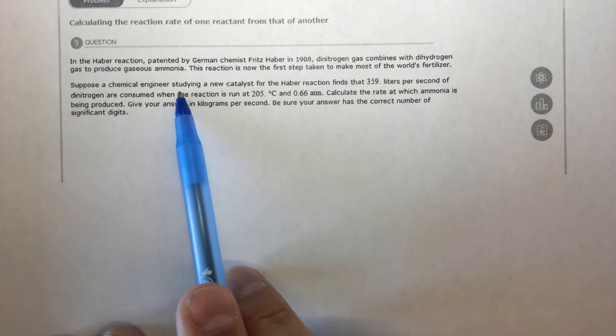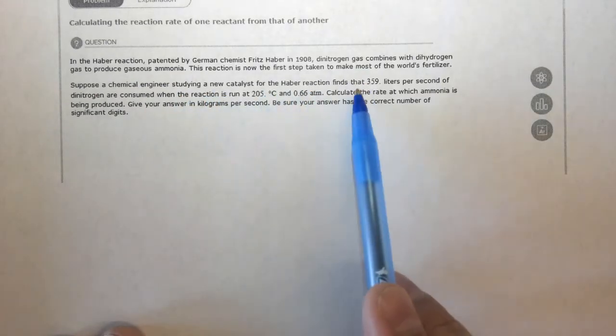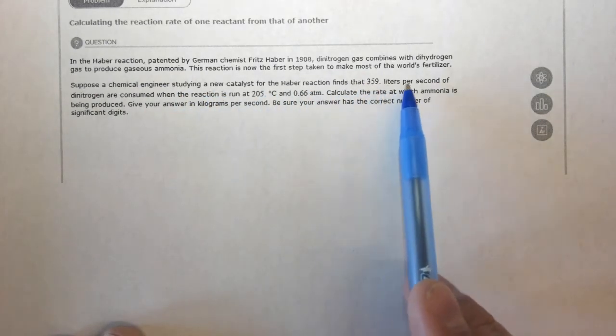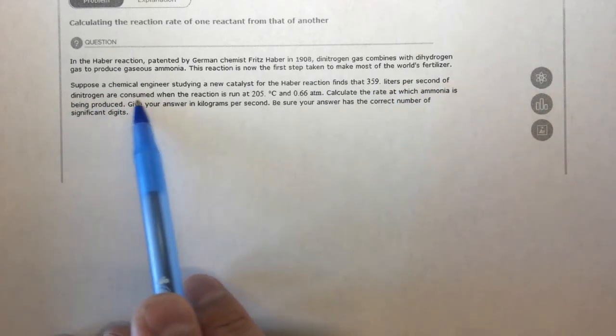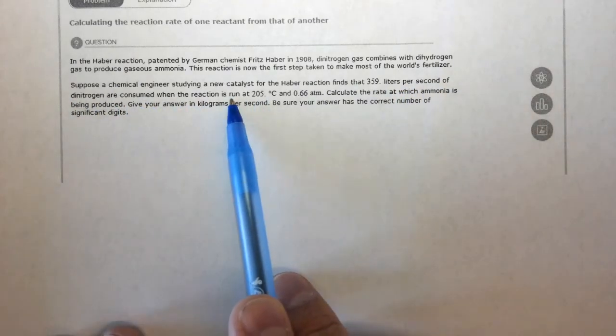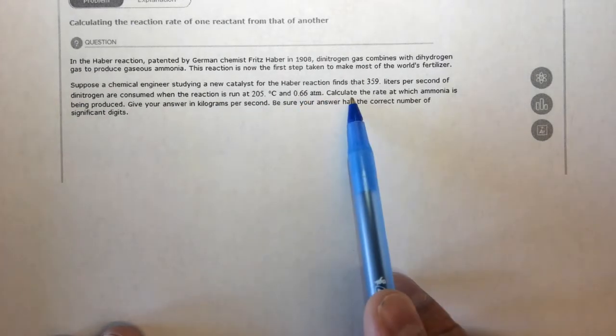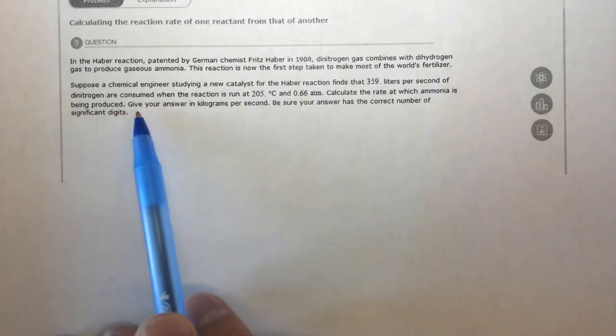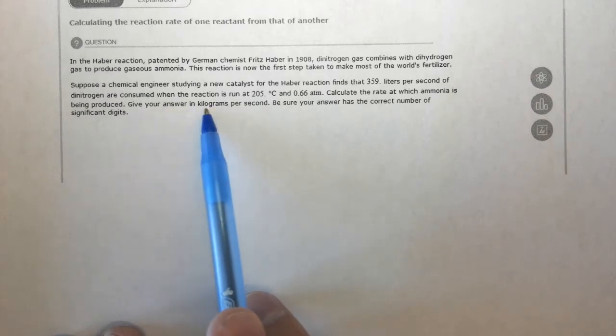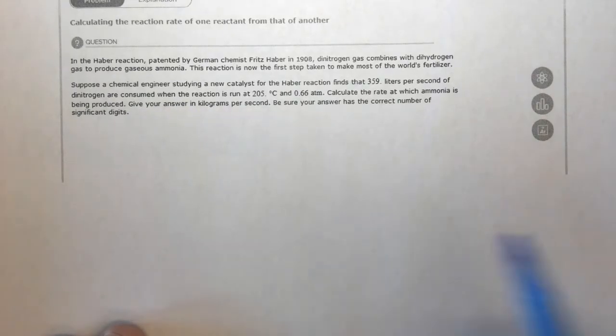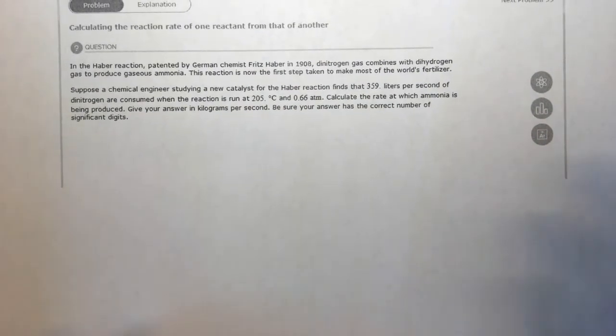Suppose a chemical engineer studying a new catalyst for the Haber reaction finds that 359 liters per second of dinitrogen are consumed when the reaction is run at 205 degrees C and 0.66 atmospheres. Calculate the rate at which ammonia is being produced. Give your answer in kilograms per second. Be sure you have the correct number of significant digits.